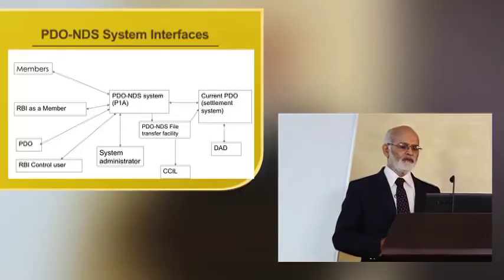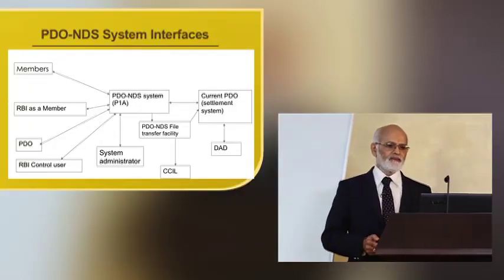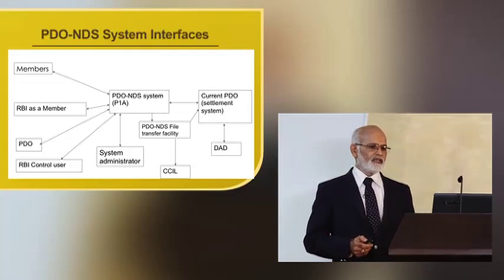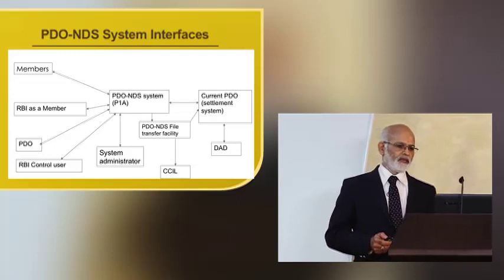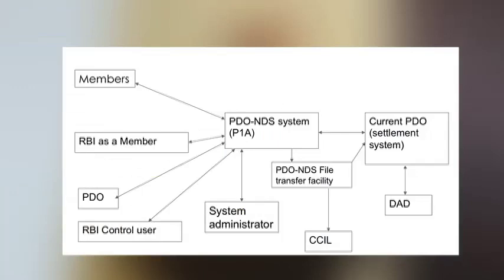The PDO and NDS system interfaces: members are connected to the PDO NDS system. RBI is a member, PDOs are members, RBI controller and CCIL is another facility, and DID department is another facility. This connectivity is pictorially represented through this picture.